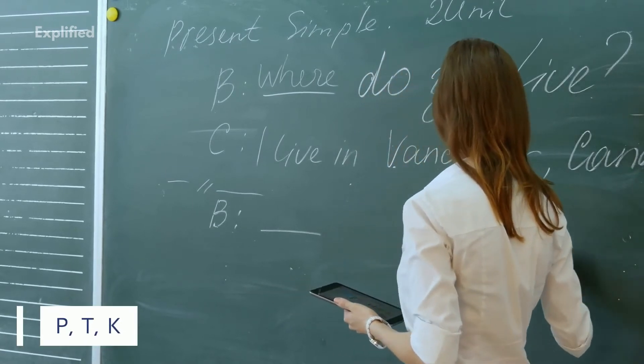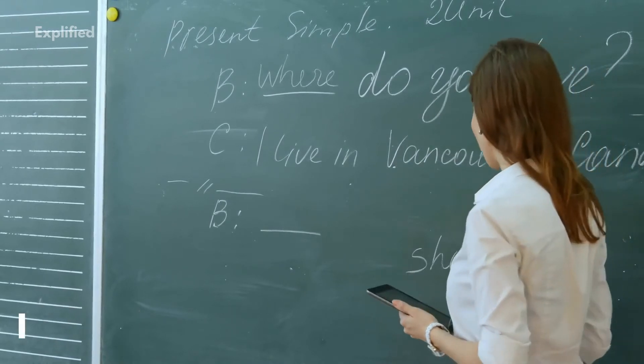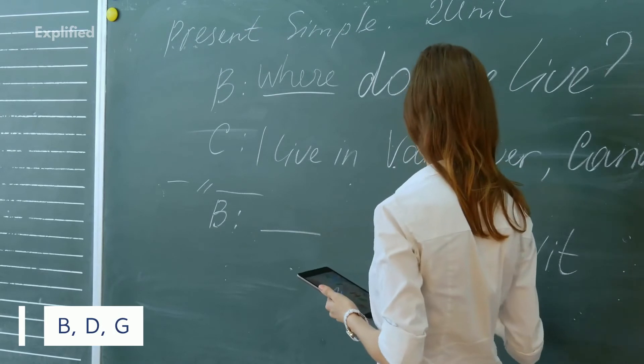But if p, t, and k are preceded by a stressed syllable, then they shifted through a double sound shift to b, d, and g.